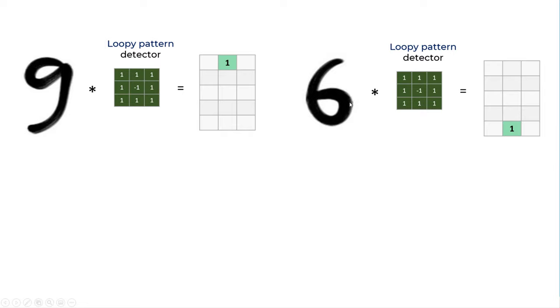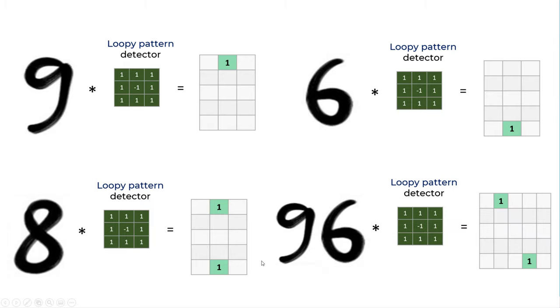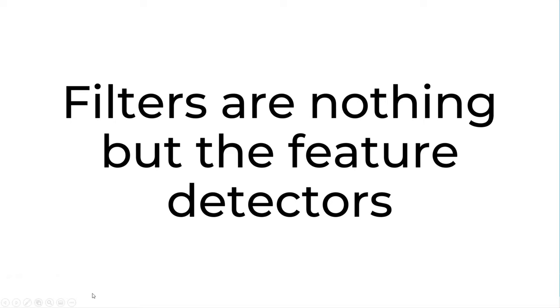For number six, it will be activated in the bottom in this area. If you have two loopy patterns, the feature will be activated at top and bottom. In summary, when you apply this filter or a convolution operation, you are generating a feature map that has that particular feature detected. So in a way, filters are nothing but the feature detectors.